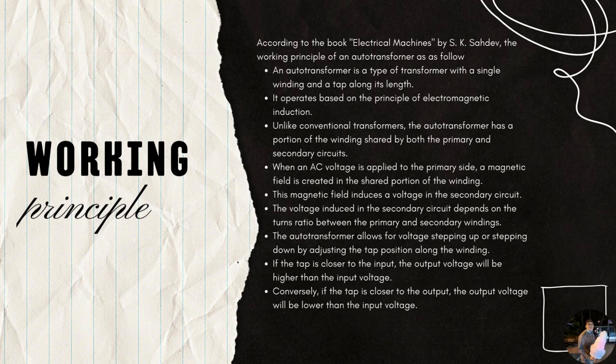According to the book 'Electrical Machines' by S.K. Sahdev, the working principles of an auto transformer are as follows. An auto transformer is a type of transformer with a single winding and a tap along its length. It operates based on the principle of electromagnetic induction. Unlike a conventional transformer, it has a portion of the winding shared by both the primary and secondary circuits. When an AC voltage supply is applied at the primary side, a magnetic field is created in the shared portion of the winding, which induces a voltage in the secondary circuit. This induced voltage depends on the turns ratio between the primary and secondary winding.